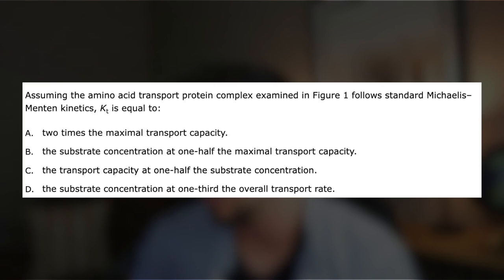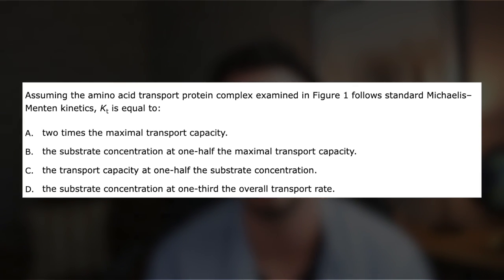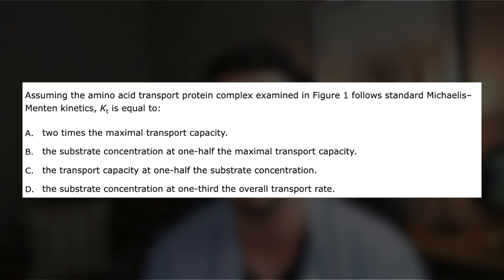You're looking for something that says the substrate concentration at one-half Vmax. Answer A says Kt equals double the transport capacity maximum — that's double Vmax, so probably not. Answer B says substrate concentration at one-half Vmax — that's Km, so B is correct. Answer C says the transport capacity at one-half substrate, meaning velocity at one-half maximum substrate, which is not a defined concept. Answer D gives substrate concentration at one-third transport rate — wrong, because Km is specifically at one-half Vmax.